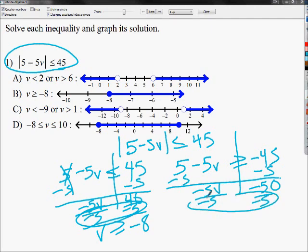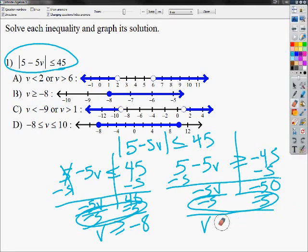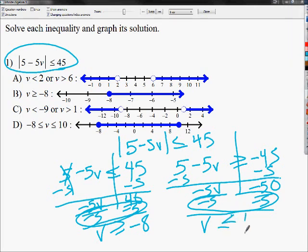Now, remember, if I divide by negative, like I did here, I need to flip over the inequality, so I'm going to go ahead and do that. Bring down my v. This gives me negative 8. On the other side, let's subtract 5. That makes this negative 50. Bring down my negative 5v. Divide by negative 5.